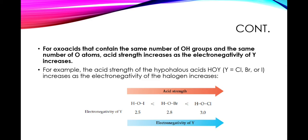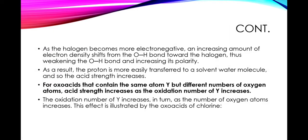For oxyacids that contain the same number of OH groups and the same number of oxygen atoms, acid strength increases as the electronegativity of Y increases. For example, the acid strength of hypohalous acids (HOY, where Y could be chlorine, bromine, or iodine) increases as the electronegativity of the halogen increases. Here the electronegativity is compared with acid strength, and as the halogen atom becomes more electronegative, an increasing amount of electron density shifts from the O-H bond towards the halogen, thus weakening the O-H bond and increasing its polarity. As a result, the proton is more easily transferred to a solvent water molecule and the acid strength increases.